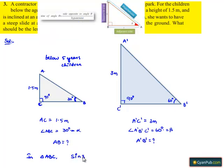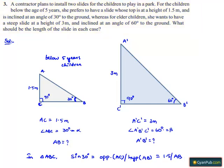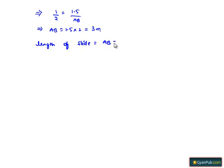Therefore, sin 30° = opposite side AC divided by hypotenuse AB, which equals 1.5 divided by AB. Since sin 30° = 1/2, we get 1/2 = 1.5 / AB, which implies AB = 1.5 × 2 = 3 meters. Therefore, the length of the slide for children below 5 years is AB = 3 meters.